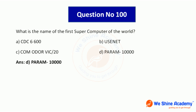Question number 100: What is the world's first supercomputer? The answer is Param 10000. Answer option D.